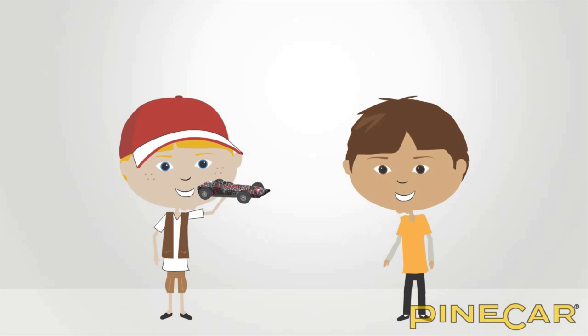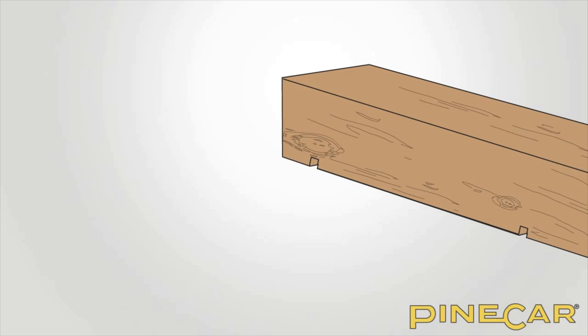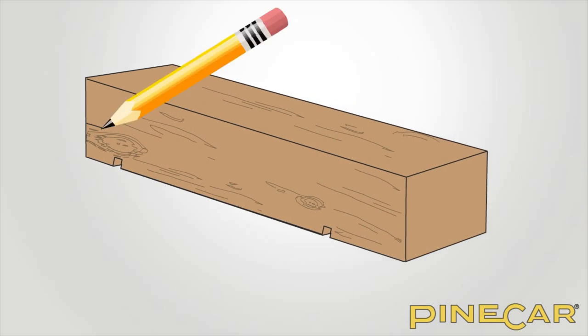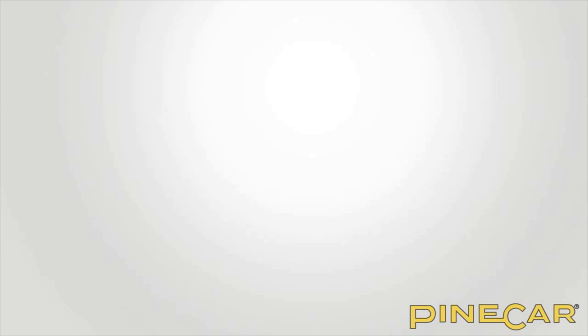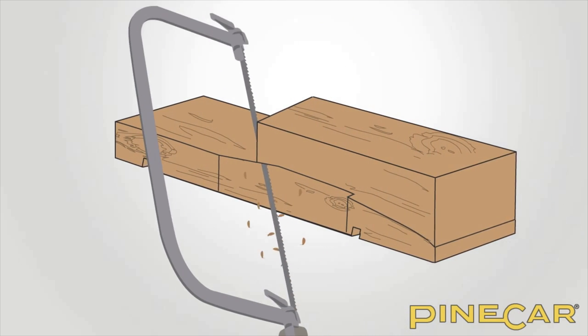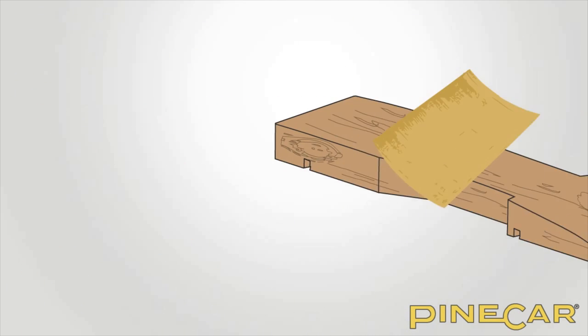Joe's excited and ready to build his car. He has some woodworking skills and wants to start with a standard block to make a custom styled car body. Joe uses the racer shaping tools to cut and shape his car and then sands everything smooth.